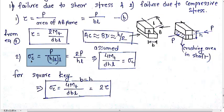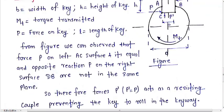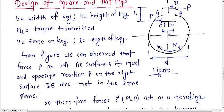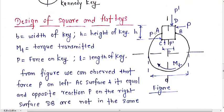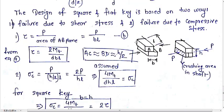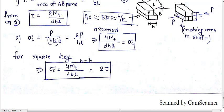Next consideration is failure due to crushing stress. Sigma c equals load by area. Crushing will occur on the height section throughout the length. The key is mounted half on the shaft and half the section is outside on the hub. I am assuming AC is approximately equal to BD approximately equal to h by 2.